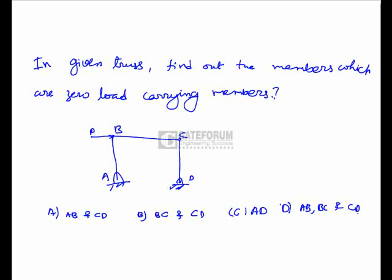Given a truss, find out the members which are zero load carrying members. In the given truss, if any one member carries some load, obviously the truss will collapse. So no one carries the applied load. Here, all are zero load carrying members. So A, B, C, and D are zero load carrying members, and the right option is D.